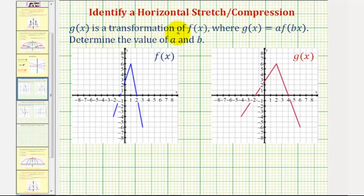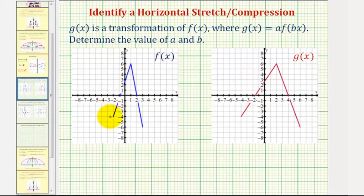G of x is a transformation of f of x, where g of x equals a times f of bx. We want to determine the value of a and the value of b. To do this, it's going to be helpful to analyze the coordinates of corresponding points. So let's find the coordinates of these three points for f of x, and then these three points for g of x.